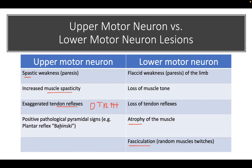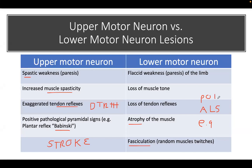In an upper motor neuron lesion, there is the famous Babinski sign — dorsiflexion of the big toe and fanning of the small toes — a classic pyramidal sign. Examples of upper motor neuron disease include stroke, which presents with paresis, later spasticity and hyperreflexia, and a positive Babinski. Lower motor neuron examples include ALS (amyotrophic lateral sclerosis), peripheral neuropathies, and poliomyelitis.